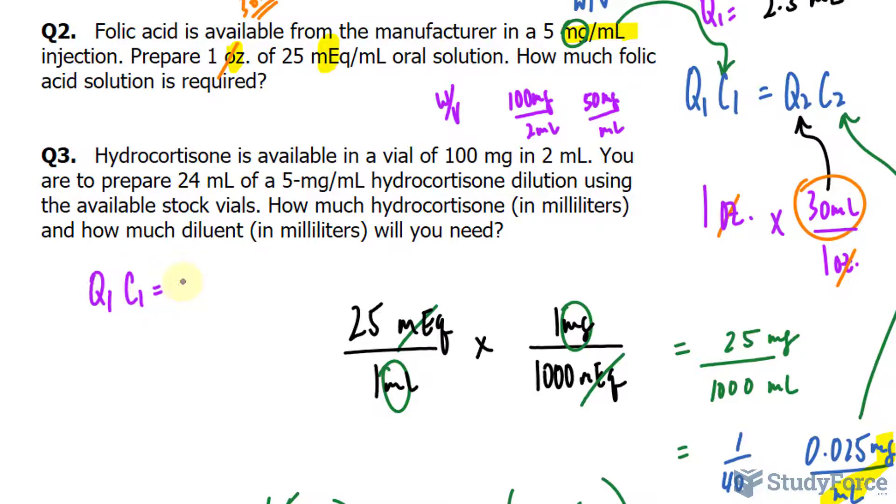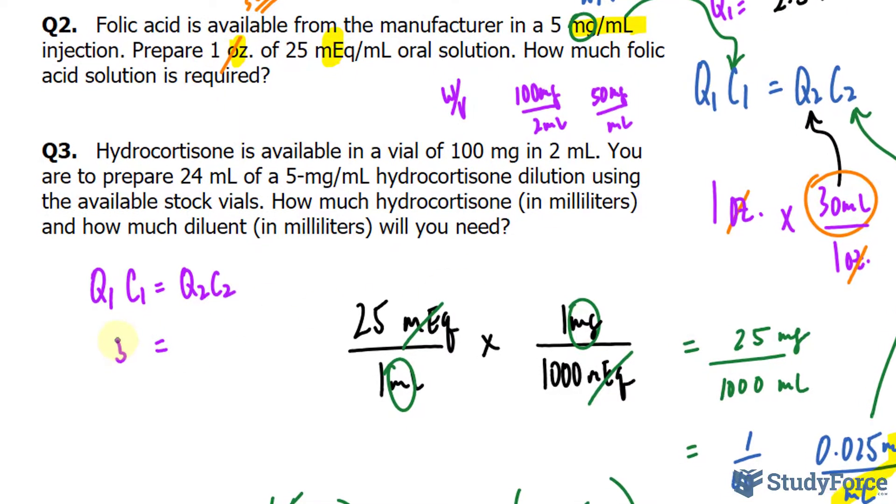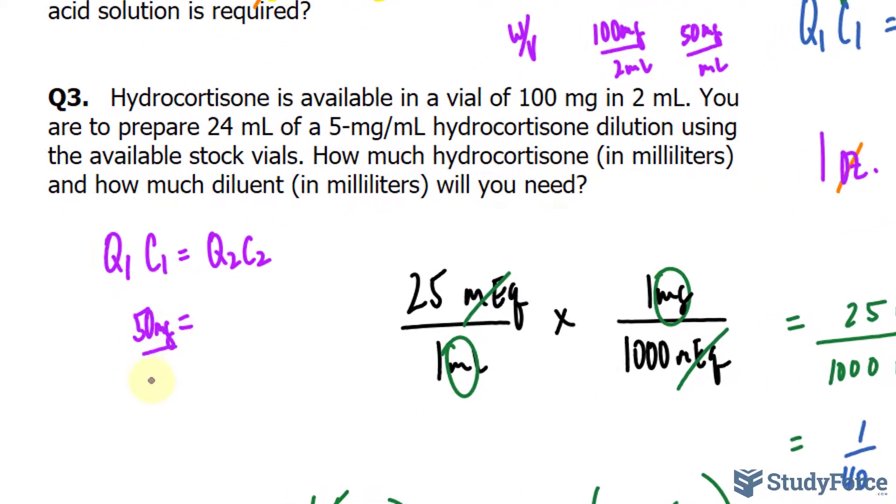Q1C1 is equal to Q2C2. The concentration of the stock solution is 50 milligrams per milliliter. And they want us to prepare 24 milliliters, so that's the quantity of the final solution, which will replace Q2. And its concentration is 5 milligrams per milliliter. And I should also write down the units for 24, it is milliliter. Notice how the units cancel out.